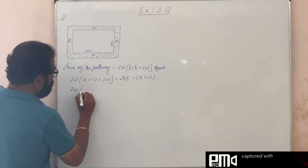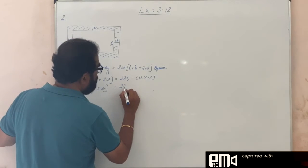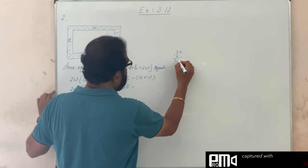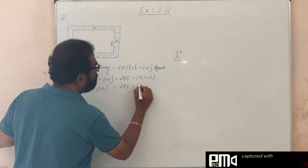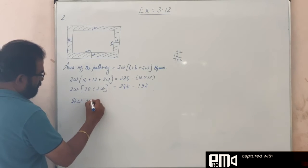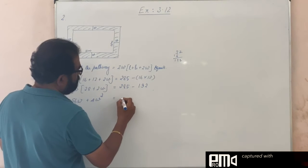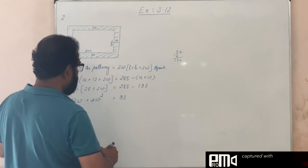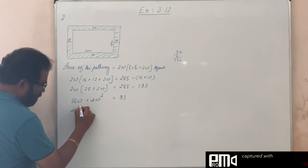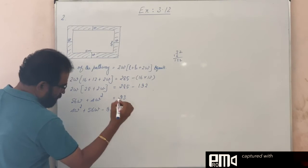So: 2W into (16 plus 12), that is 28, plus 2W equals 285 minus 16 into 12, which is 192. Multiplying 2W inside gives 56W plus 4W squared. And 285 minus 192 is 93. So we get 4W squared plus 56W minus 93 equals 0.